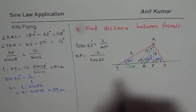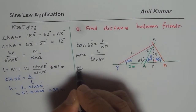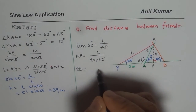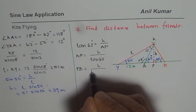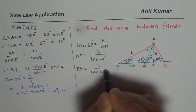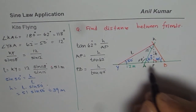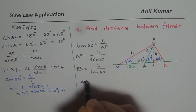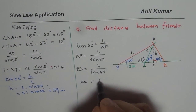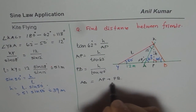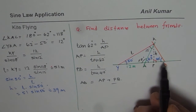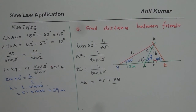Similarly, you can find PB: PB equals height over tan of 40 degrees. You can calculate these two values and then distance AB equals the sum of the two distances, AP plus PB. That is how you should be solving triangles where sine law could be applied. I hope that helps — thank you and all the best.